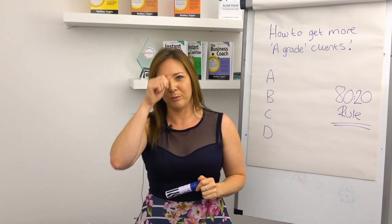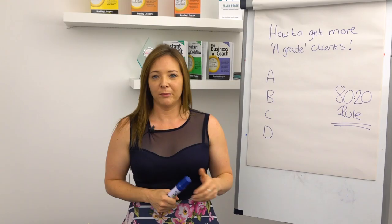Some examples of a D-grade client would be things like: perhaps they always pay you late, they give you the most amount of grief, perhaps they're even rude to you or your team, they haggle on price — they're just a bit of a nightmare to work with.